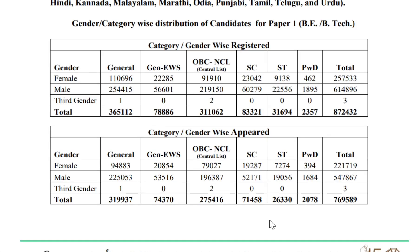For 90 percentile: (100 minus 90) divided by 100 equals 1/10, into number of candidates plus 1. Total candidates appeared is 7,69,589, divided by 10 equals 76,958, plus 1 gives your rank as 76,959.